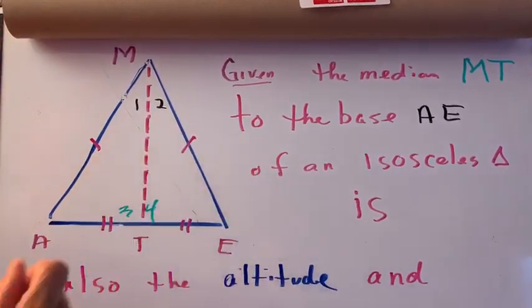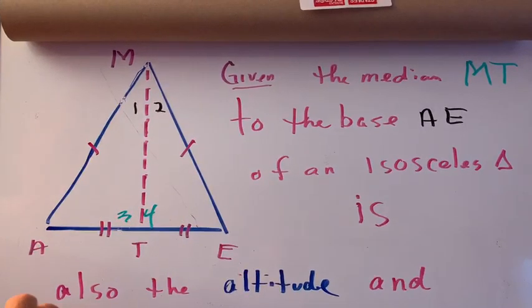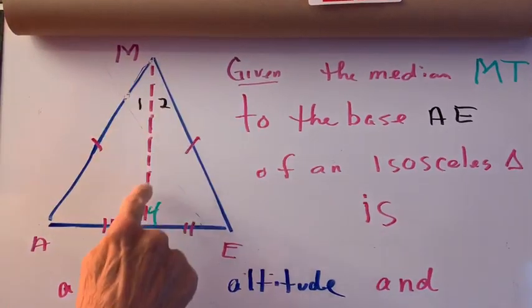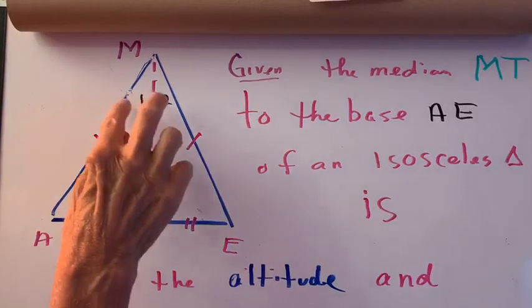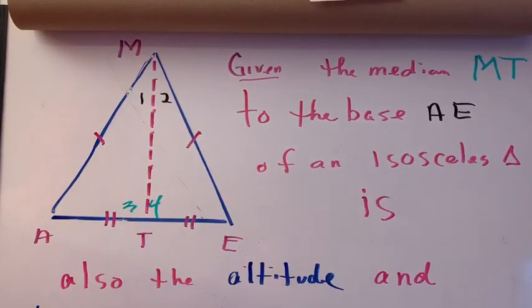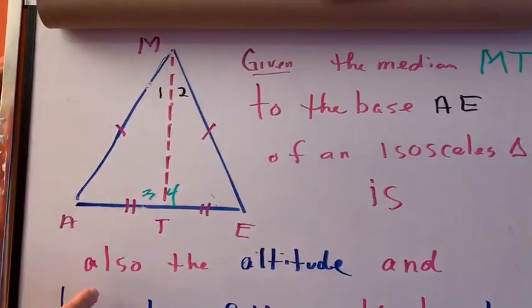Of an isosceles triangle, we're going to prove that the median is also the altitude and bisector of the vertical angle. So if we go down and look at what I say over here...